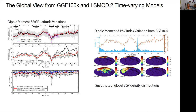If we look at the global view, we see that the dipole moment goes down when there's a global excursion, which is the Le Champ. We see that there is a decrease in VGP latitude. And over here, we see that the Paleo secular variation index, which measures this activity, is large during the Le Champ excursion. It has slightly larger than average values at other times, but it does not globally exceed the 0.5 threshold that we think registers an excursion. And if we look at the VGP distribution for the time with the Le Champ excursion, we see that it's much broader than it is at other times.